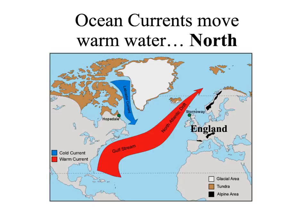So we have cold currents and warm currents. These warm and cold ocean currents, the rotation of the Earth, the shape of the Earth, and the difference in how land heats up and cools quickly while water heats and cools slowly — put all these together and they cause the weather.